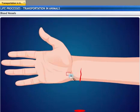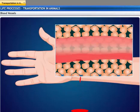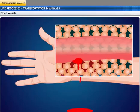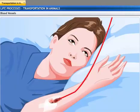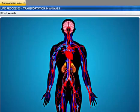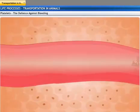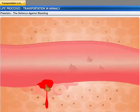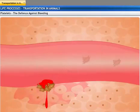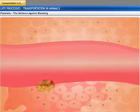If a blood vessel ruptures or gets cut, blood leaks out and results in bleeding. This makes blood flow out of the body. Alternatively, the blood may flow out through a break in the blood vessel and stay within the tissue spaces. Both these cases could prove to be fatal. In addition, bleeding results in low pressure in the blood vessels, which affects the working of the heart. Platelet cells in the blood act as a defense against bleeding. When a blood vessel ruptures, platelets form a blood clot at the point of injury and help to plug the leak.